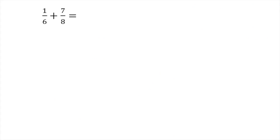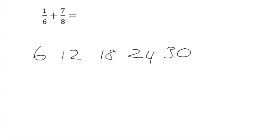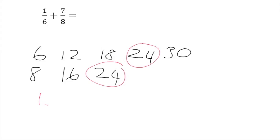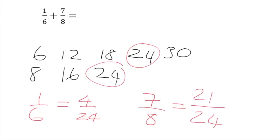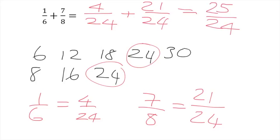Try this one in your homework books: one-sixth plus seven-eighths. List multiples of 6 (6, 12, 18, 24) and 8 (8, 16, 24) — the common denominator is 24. One-sixth becomes 4 over 24, and seven-eighths becomes 21 over 24. So 4 over 24 plus 21 over 24 gives an answer of 25 over 24.